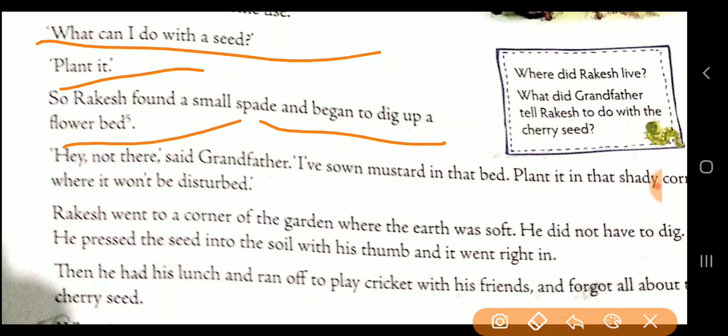Rakesh found a spade and began to dig up a flower bed, but grandfather said, 'No, I have already planted mustard there. Plant it in a shady corner — shady means a sheltered place with shadow — so nobody will disturb it.' Rakesh went to the corner of the garden where the earth was very soft, and pressed the seed into the soil with his thumb. The seed went right in.